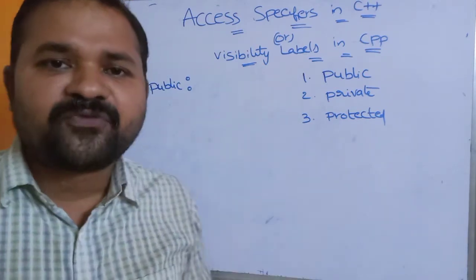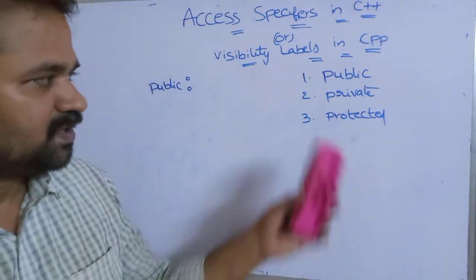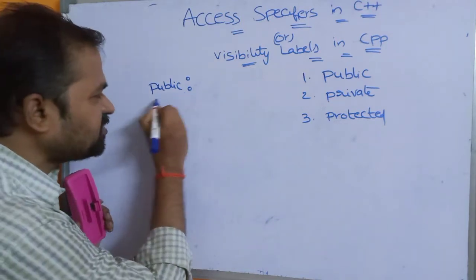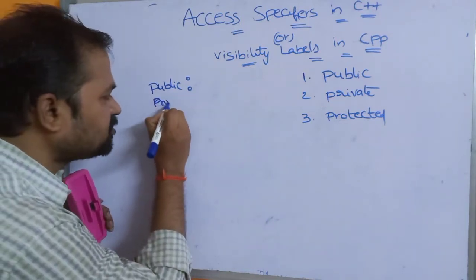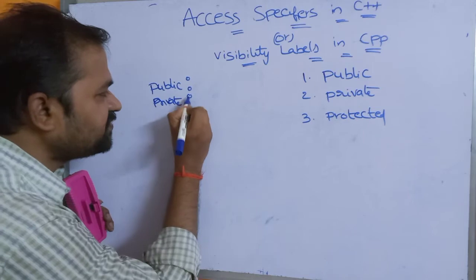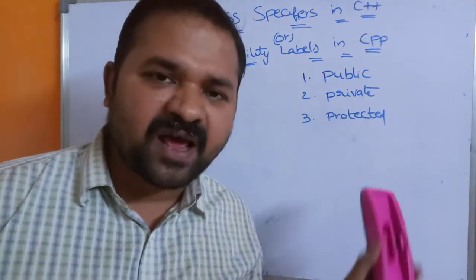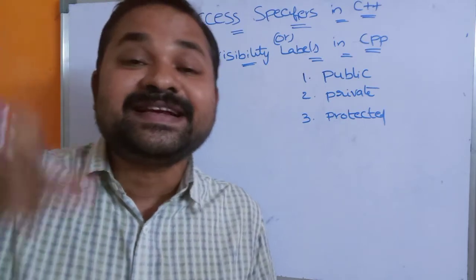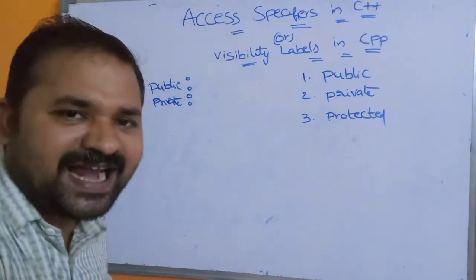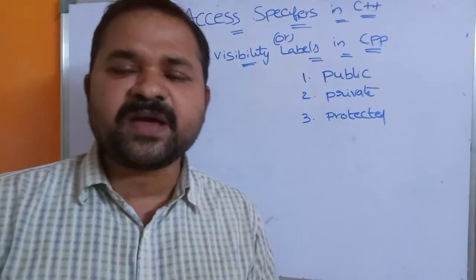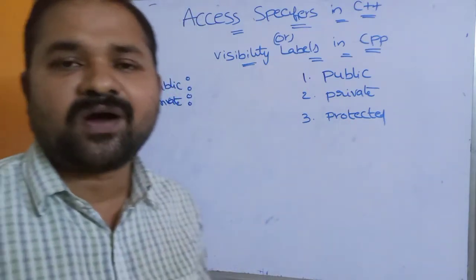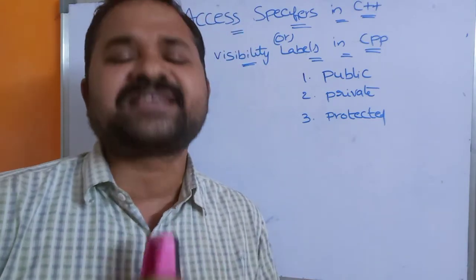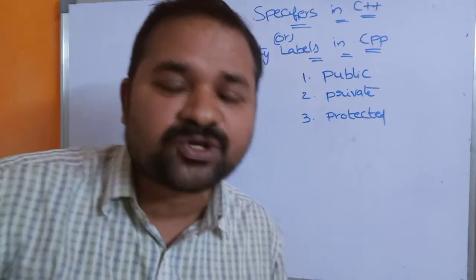Now let's see what is the private access specifier. We use the keyword private followed by a colon symbol. The members of the private section can be accessible from only inside the class. From outside the class or from the main function, we cannot access private members. Private members are always accessible from only inside the class.